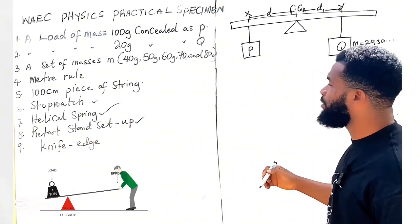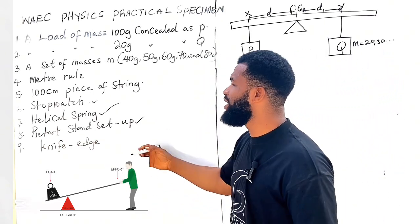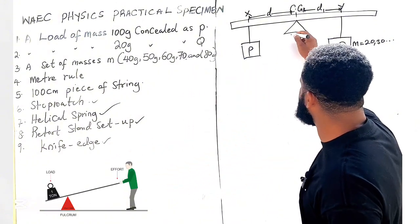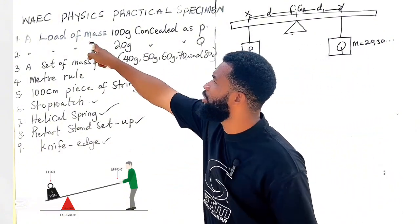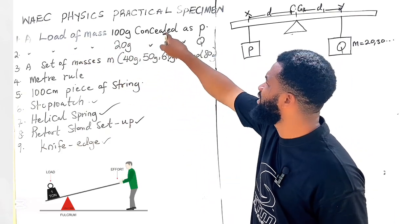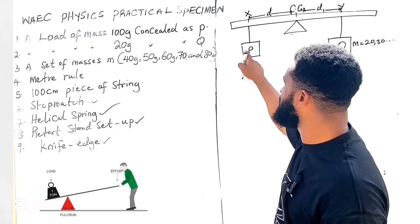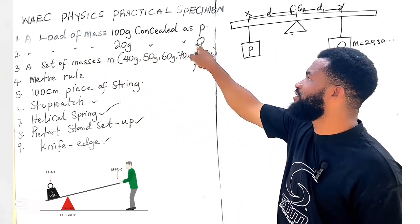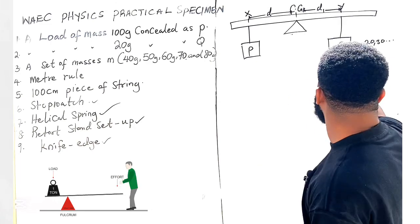In this experiment I'm going to analyze what will likely come out when you are using the knife edge, which is this one, then you are using a load of mass 100 gram concealed and labeled as P, which is this P.